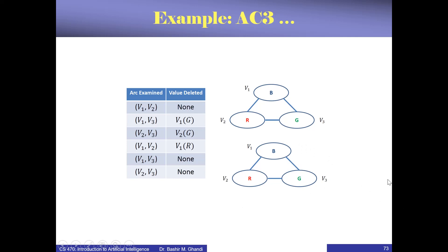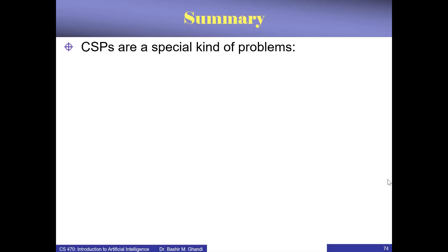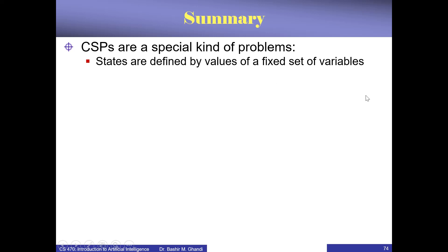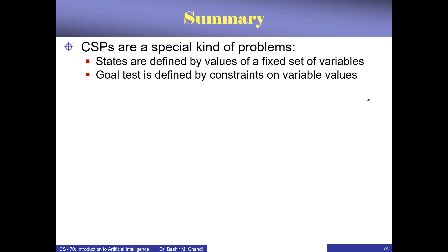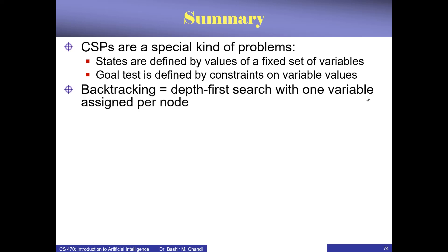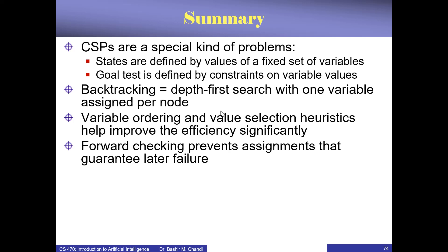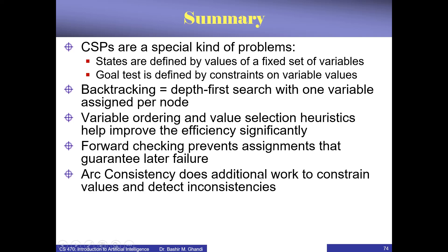In summary, CSPs are a special kind of problem that are widely applicable. CSP states are defined by the values of a fixed set of variables, and the goal test is defined by constraints on variable values. The algorithm generally used to solve CSPs is backtracking, which is a version of depth-first search in which only one variable is assigned at each level. Forward checking prevents assignments that guarantee later failure, and arc consistency does additional work to constrain values and detect inconsistencies.